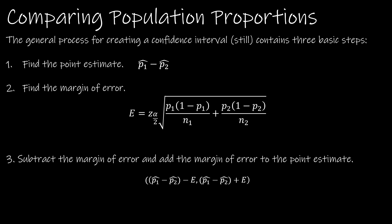Our point estimate is just going to be the difference in our observed proportions for each sample. The margin of error is essentially the standard deviation of each sample, which is P hat Q hat divided by N, and then P hat Q hat divided by N of the next sample, adding them together and taking the square root.